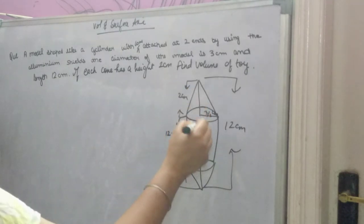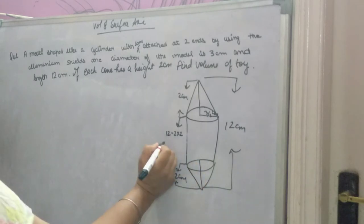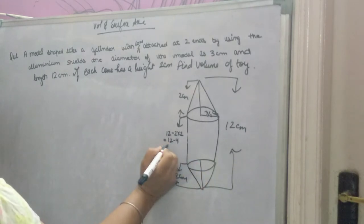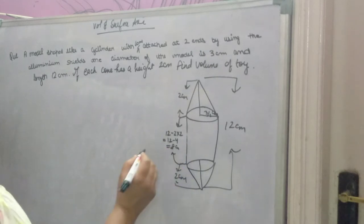Because 2 you have to subtract from here and 2 you have to subtract from here, you will get 12 minus 4, that is 8 cm. So the height of the cylinder is 8 cm.